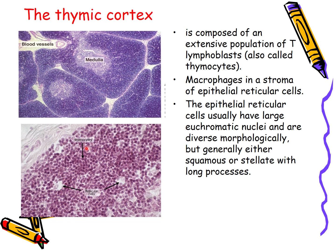At higher magnification, the small lymphocytes in the thymic cortex are visible — these are also called thymocytes or lymphoblasts, representing a population of T-lymphoblasts. Macrophages are also present in the stroma of the epithelial reticular cells. These epithelial reticular cells have large euchromatic nuclei.